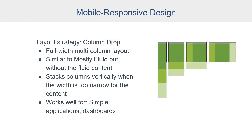Another design strategy is called Column Drop. This is a pattern for full-width, multi-column layouts, very similar to Mostly Fluid but without the fluid content, because the size of the elements stays the same. It stacks columns vertically as the width of the window becomes too narrow for the content. This pattern works really well for simple applications and dashboards. On the largest display you have three columns side by side, and as you get smaller, you start dropping a column down — two columns with the third dropped below — until everything is in a single vertical column on the smallest displays. Unlike Mostly Fluid, it can have multiple breakpoints.